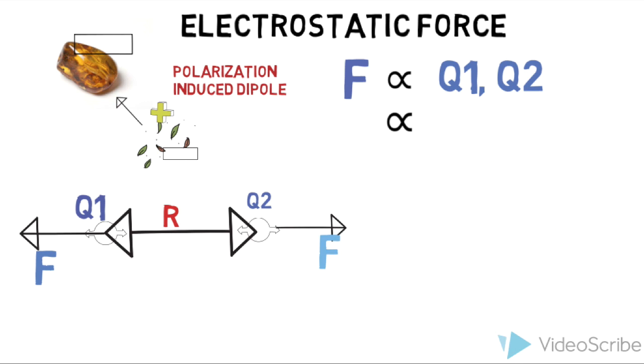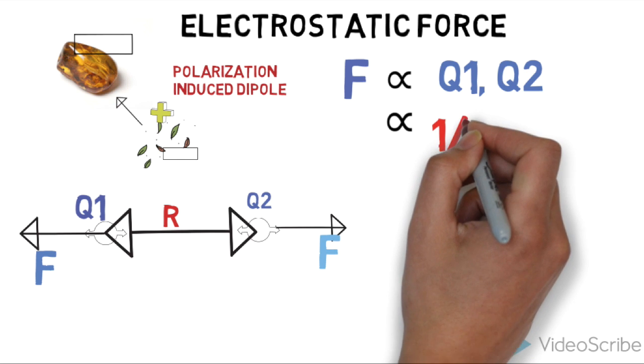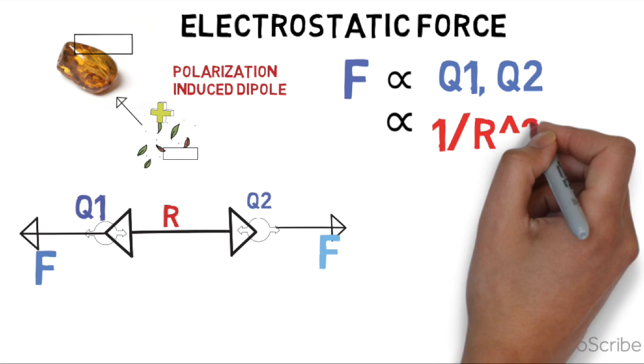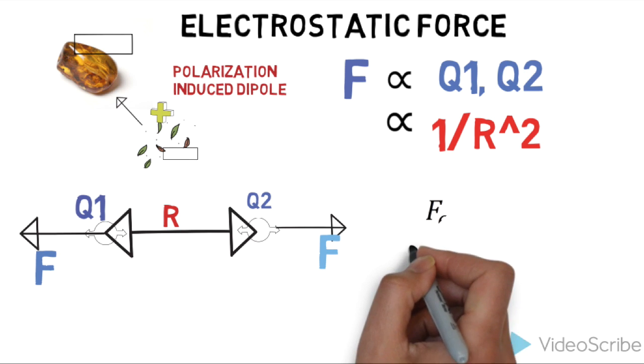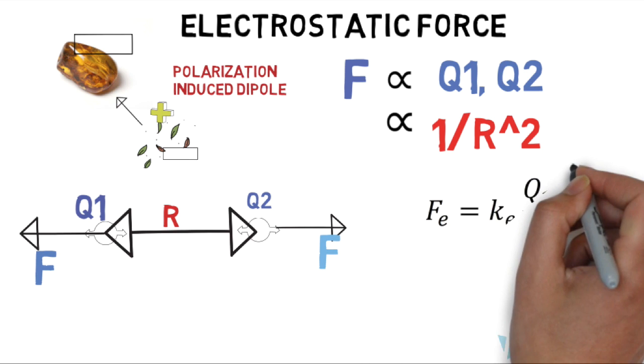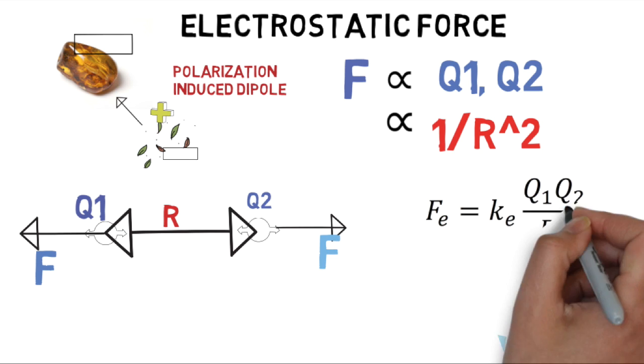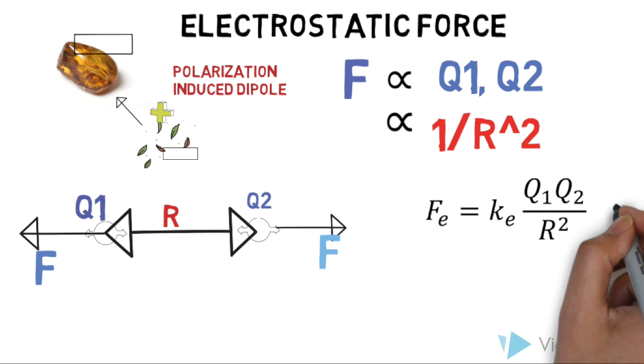This force is also indirectly proportional to the distance away from each other, by 1 over r squared, meaning that the force will decrease exponentially as the distance increases, and the force will increase exponentially as the distance decreases. Putting this all together, we can calculate the electrostatic force.